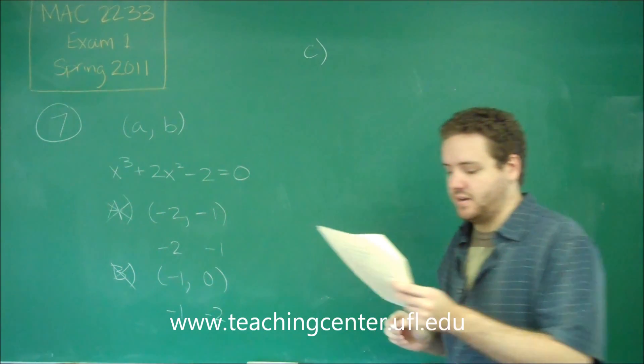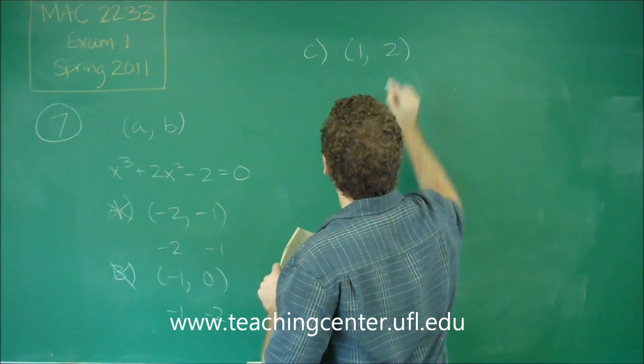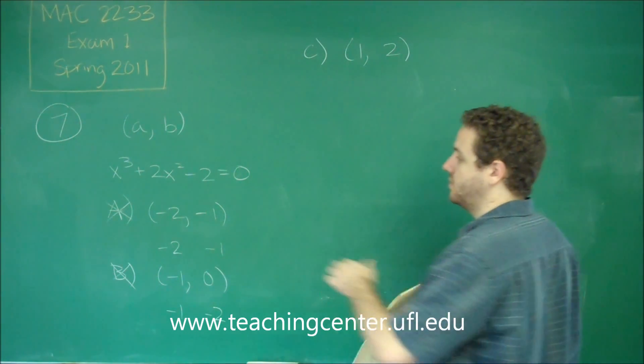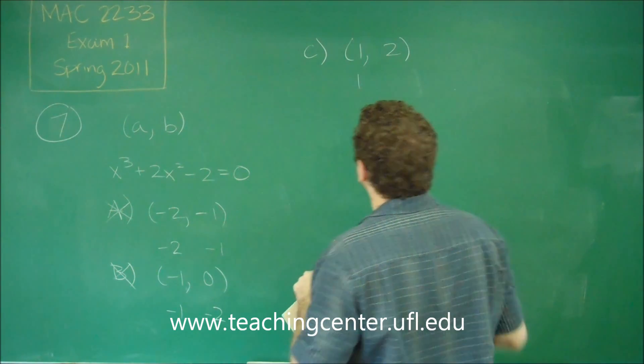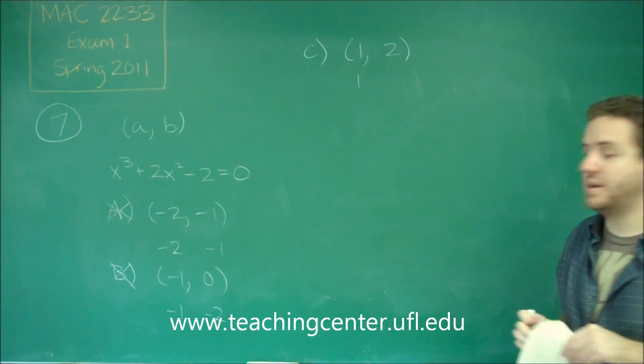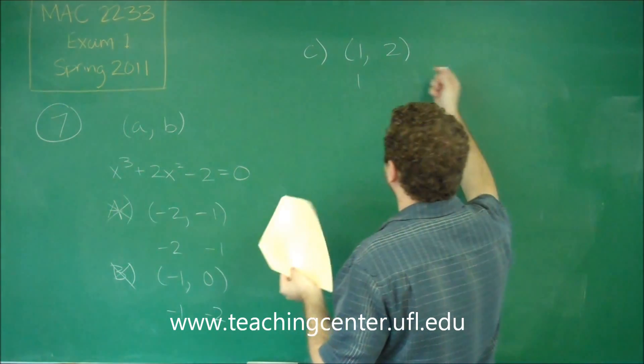Answer choice C, we have the interval one to two. Let's try that. If we try one, we get one plus two minus two, that gives us one. And if we plug in two, we're going to get eight plus eight minus two, definitely positive.